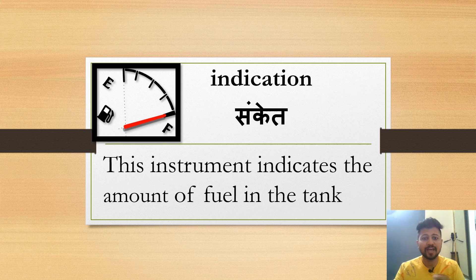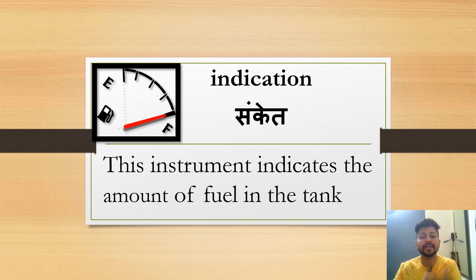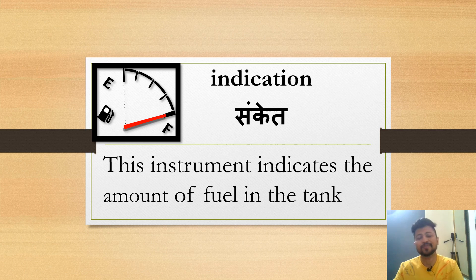The last word is indication, meaning sanket — a signal. If you have a bike, you might have seen the meter that indicates how much fuel is left in your fuel tank. This instrument indicates the amount of fuel in the tank — indicate means to give a signal. That is all for today's video. If you like this video, do subscribe to the channel. See you in the next video.